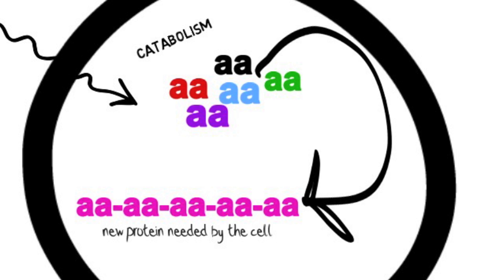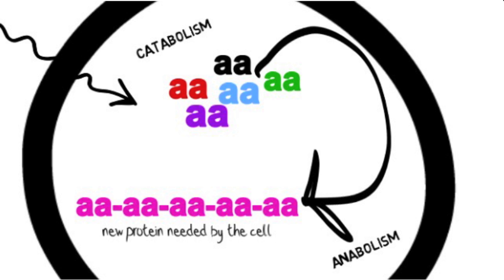Reactions that make things, such as linking smaller units to make a bigger, more complex one, are called anabolic. For example, to make a protein, amino acids are linked together to make a bigger, more complex molecule, the protein. All the reactions that synthesize something is what we call anabolism.